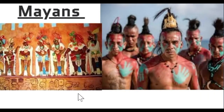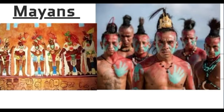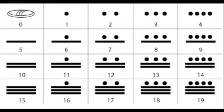The Mayans invented zero independently approximately in 4 AD. They developed zero as a placeholder, and the Mayan numeral system was used to represent numbers and calendar dates in Maya civilization. The Mayans used an I-like character to represent zero, one as a dot, and five as a bar.